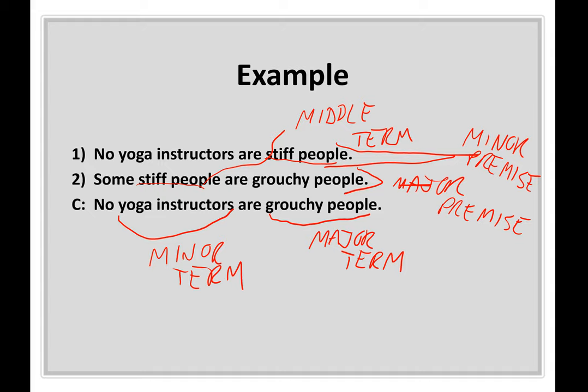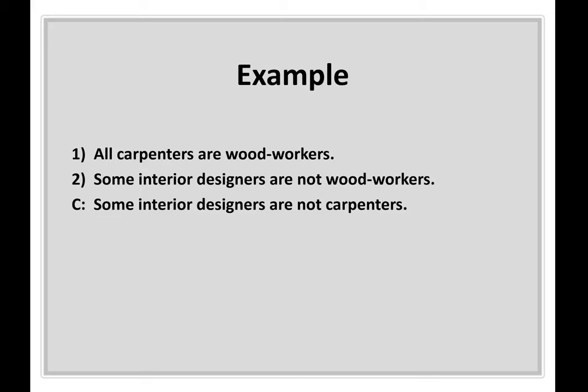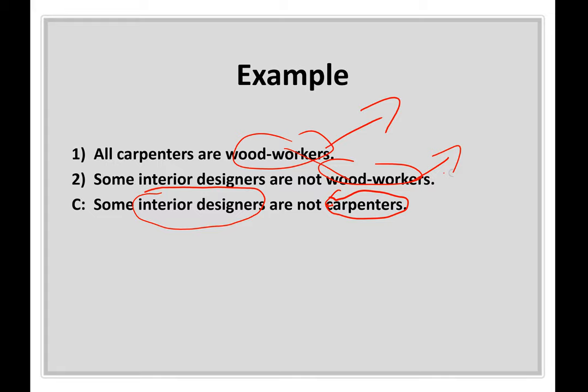I know this may seem tedious, but these are going to be helpful tools for working with enthymemes. Next example: all carpenters are woodworkers; some interior designers are not woodworkers; therefore some interior designers are not carpenters. Major term: carpenters. Minor term: interior designers. Middle term: woodworkers. That makes 'all carpenters are woodworkers' your major premise, and 'some interior designers are not woodworkers' your minor premise.